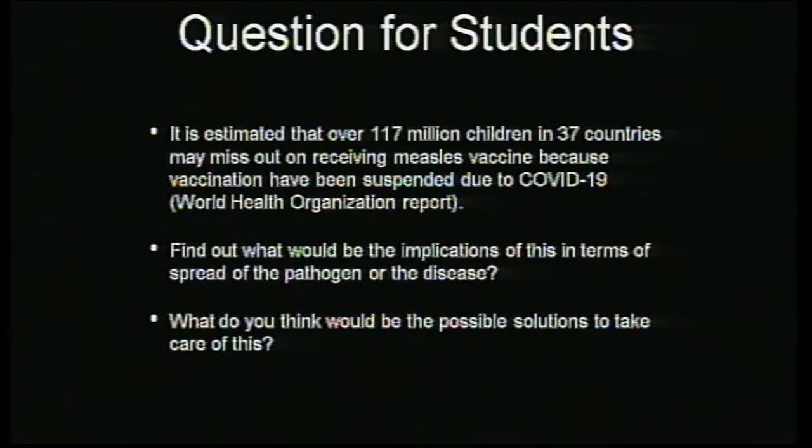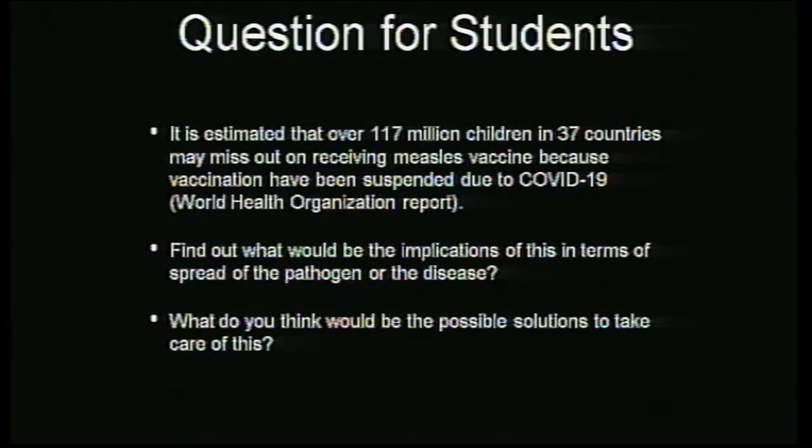Thank you, Dr. Shimray, for being with us. Before we close, we leave a question for students: 117 million people are missing vaccination — what would be the consequences? Since we've talked so much about vaccination, students should go back and think about this and come up with their own solutions. You can send your answers to our official email: ciet.kishormanch@gmail.com. In the next session we will talk on polynomials for Class 10, so be with us — we'll be back after a short while.